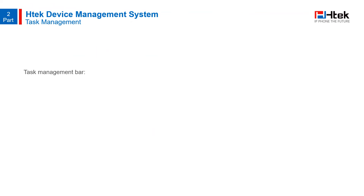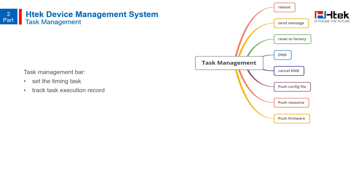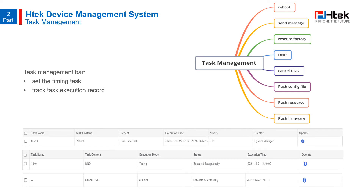In the task management module, you can flexibly set timing tasks instead of relying on manual operation, and you can also check the record of each task execution. Task content includes reboot, send message, reset to factory, DND, cancel DND, push configuration file, push resource, and push firmware. Here are examples of created tasks where you can see the task name, content, execution time, status, and more.